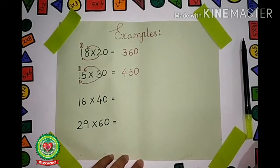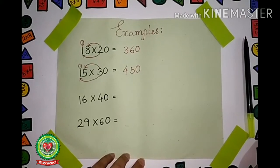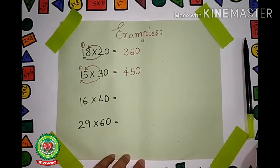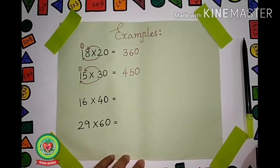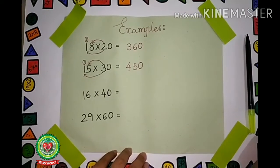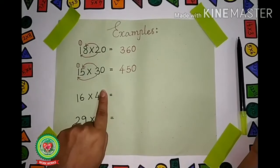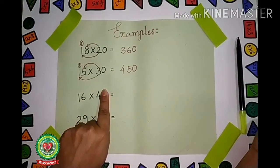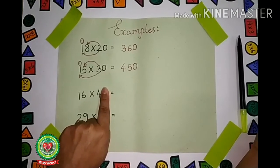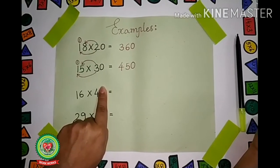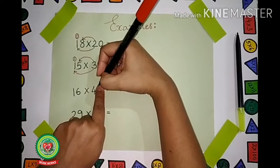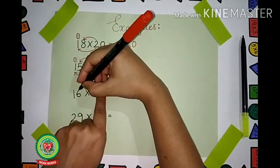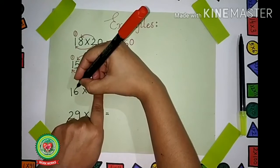Read it aloud with me: 16 × 40. What is the number given to you? 16 × 40. Again children, take your finger and hide the 0, then read the question again: 16 × 4. The very first step is to hide the 0. Then the second step is to multiply 4 with the first digit from the right hand side.